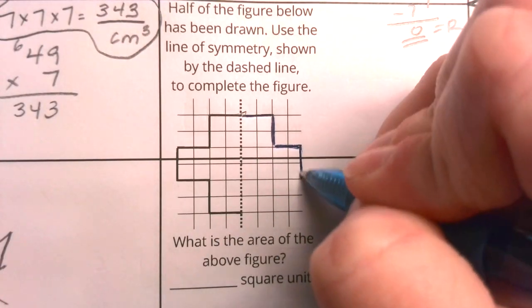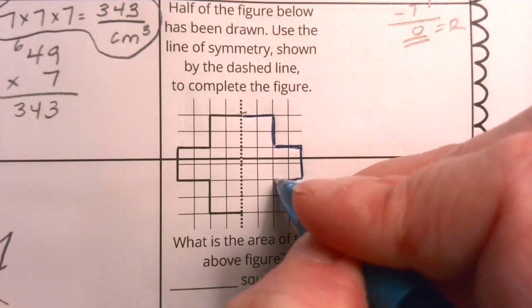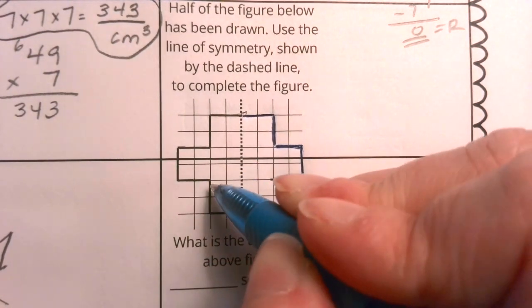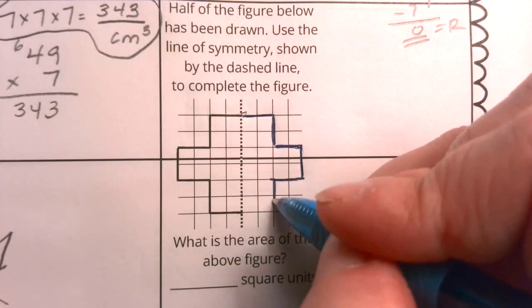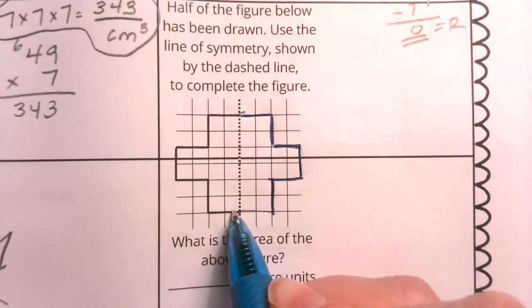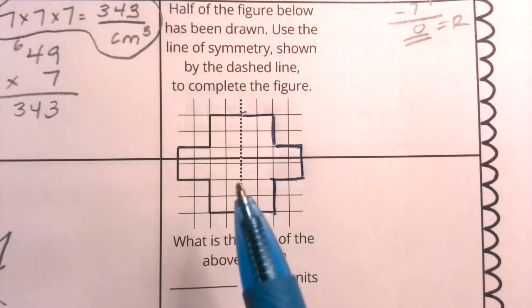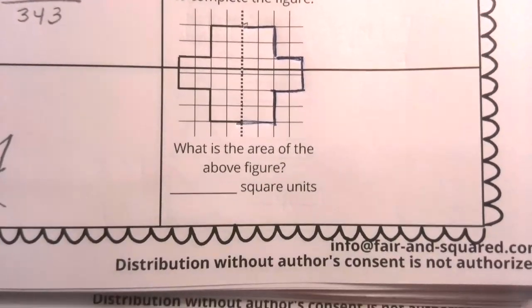Over here, I went back in two units. So I'm going to go back in two units. Here, I went down two units. So I should go down two units. And then I'm going to go in two units, just connect back my shape, okay? So certainly, boys and girls, this is practicing a line of symmetry.